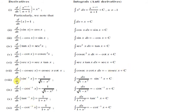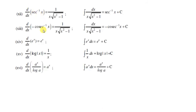d/dx of sin⁻¹x = 1/√(1-x²), और d/dx of (-cos⁻¹x) = 1/√(1-x²) भी होगा। तो इसका integration दोनों possible हैं — sin⁻¹x + c भी हो सकता है, -cos⁻¹x + c भी हो सकता है। इसी तरह tan⁻¹x का differentiation 1/(1+x²) है, तो ∫dx/(1+x²) = tan⁻¹x + c या -cot⁻¹x + c। ∫dx/(x√(x²-1)) = sec⁻¹x + c या -cosec⁻¹x + c भी हो सकता है।